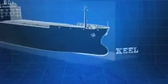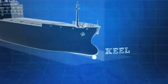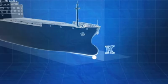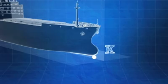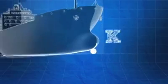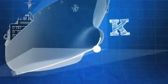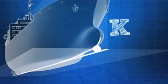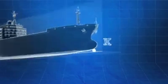The lowest point of the keel, or K, is the point from which vertical distances are measured on a ship. K is located at the intersection of the centerline and the baseline.